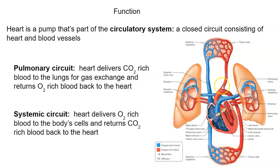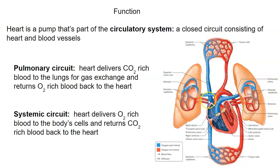The systemic circuit is when the heart delivers oxygen-rich blood to the body — to the superior portion and the inferior portion. In the capillaries, there's transcapillary exchange: oxygen is released into the tissues, and then carbon dioxide is picked up by the blood, and that carbon dioxide-rich blood returns back to the heart.